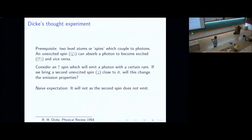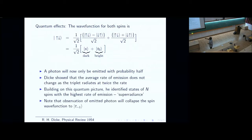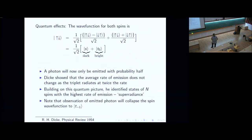The naive answer Dicke begins with is that it should not, because the second spin is in the ground state. But Dicke argues that it will, because of quantum effects. You can write the wave function for these two spins as up-down, which you can think of as (up-down minus down-up) plus (up-down plus down-up) — a singlet wave function and a triplet wave function. The singlet will not emit, while the triplet will emit a photon. So this wave function is an equal superposition of a dark state and a bright state; a photon will only be emitted with probability half. Dicke showed that the average rate of emission does not change because the triplet emits a photon at twice the rate of a single spin.